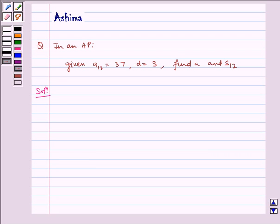Hello and welcome to the session. Let us understand the following problem today. In an AP, given A12 is equal to 37, D is equal to 3, find A and S12.